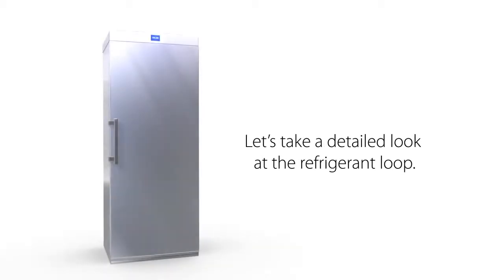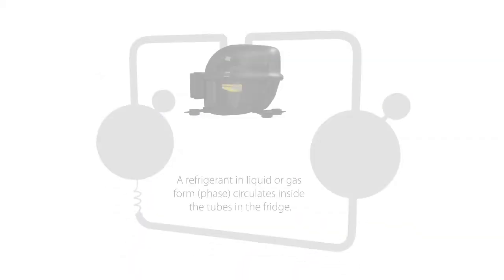Let's take a detailed look at the refrigerant loop. A refrigerant in liquid or gas phase circulates inside the tubes in the fridge.